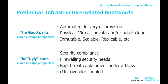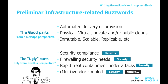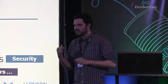The ugly parts — and not just from a DevOps perspective, but from whatever perspective — are all related to security: security compliance, firewalling, rapid threat containment, etc. Because it's complicated. Well, there will be a reason, but it's not a good reason. So let's see why.